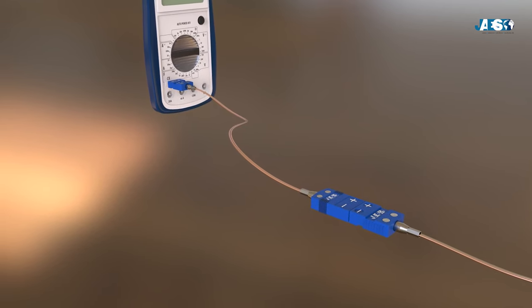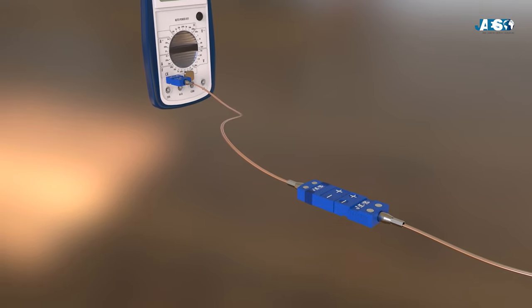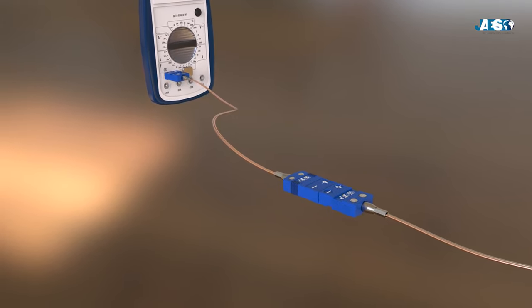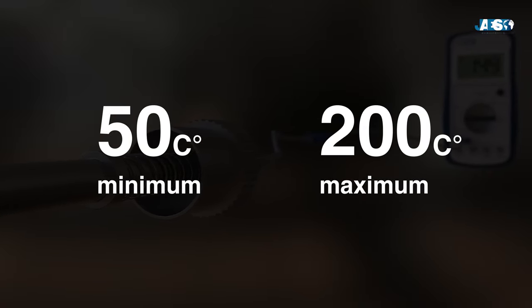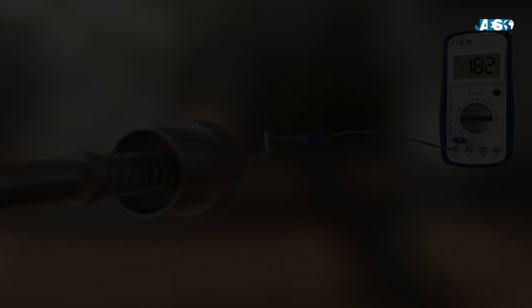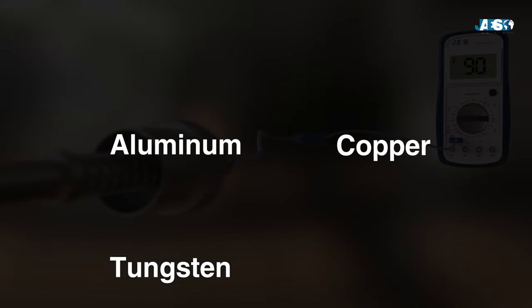Now that we've seen how a thermocouple works, let's talk about some of the variations. Many thermocouples are classified according to the minimum and maximum temperature they can record. Consequently, they are made up of several different pairs of different metals.